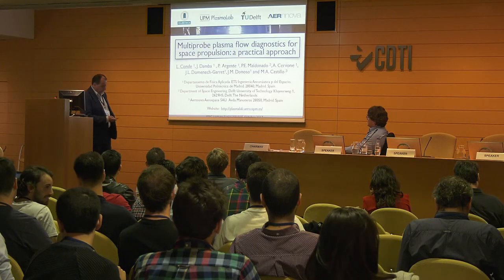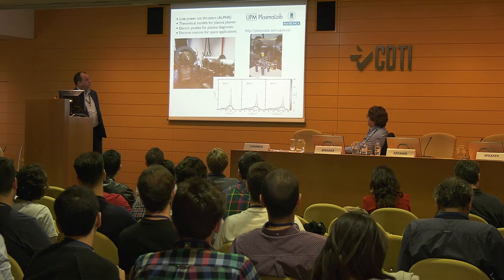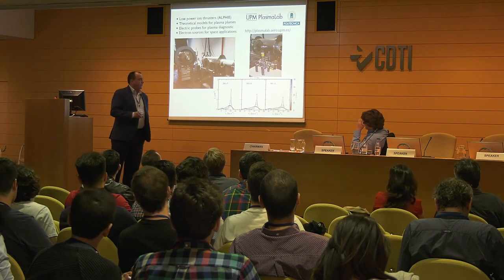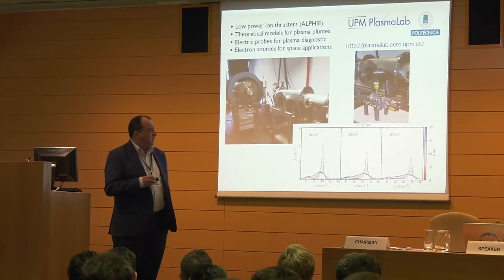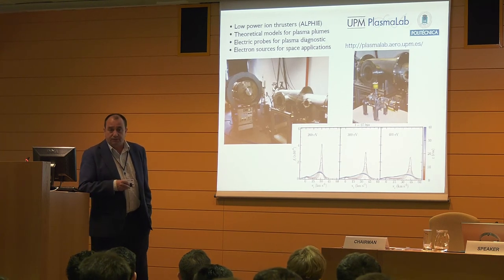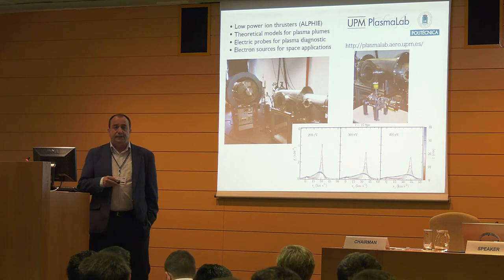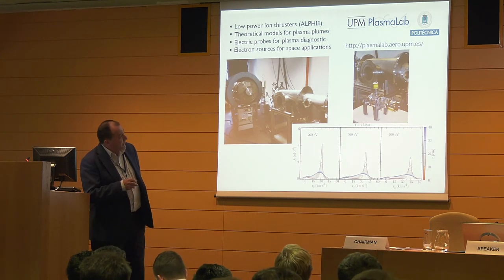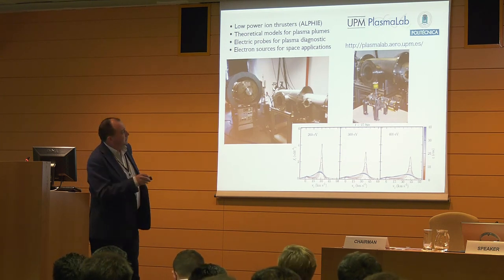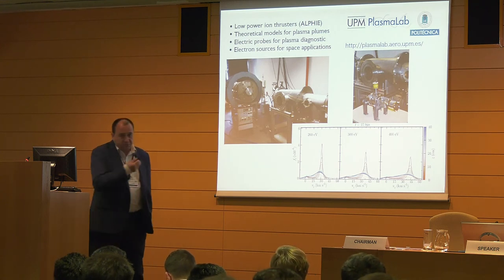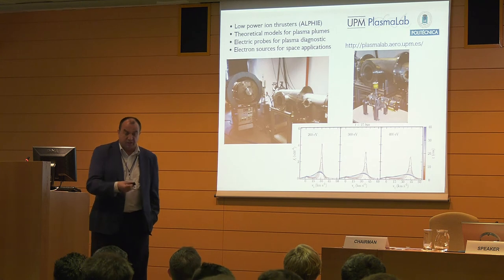This is a photograph of our laboratory. In our group we have theoretical models for plasma thrusters and we work on what is called electric probes or plasma diagnostics. To illustrate my talk I will use experimental results with true plasma thrusters. The plasma thruster is shown here, and this is one of the vacuum tanks. Here we have an interface — this is plasma exposed in the vacuum, and this is a pressure meter.